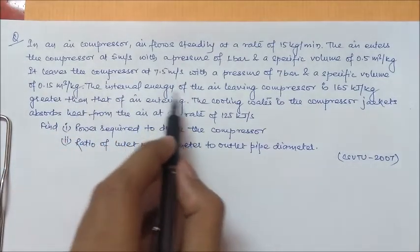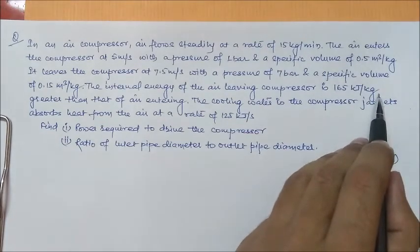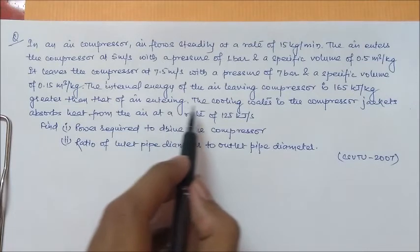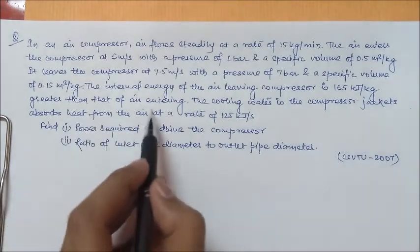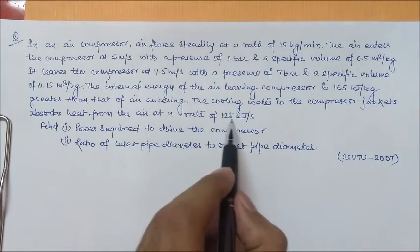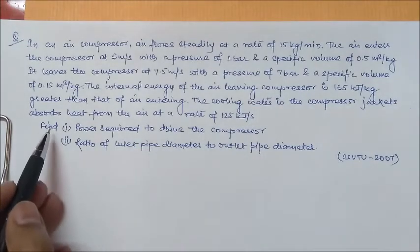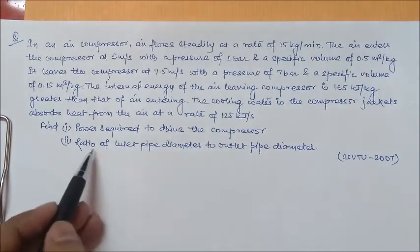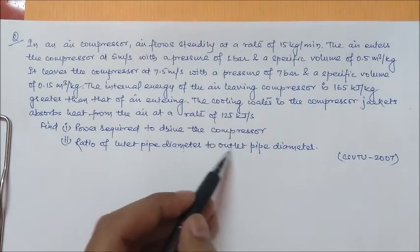The internal energy of the air leaving the compressor is 165 kJ per kg greater than that of the air entering. The cooling water in the compressor jacket absorbs heat from the air at a rate of 125 kJ per second. The question asks us to find out first, the power required to drive the compressor, and second, the ratio of the inlet pipe diameter to the outlet pipe diameter.